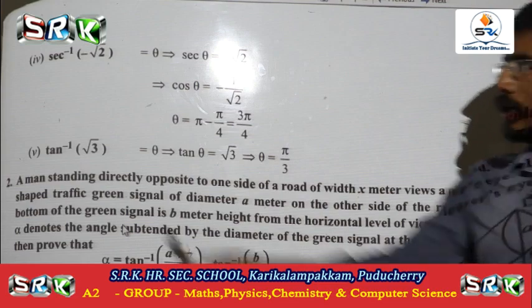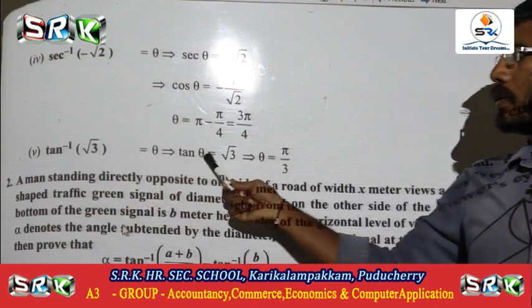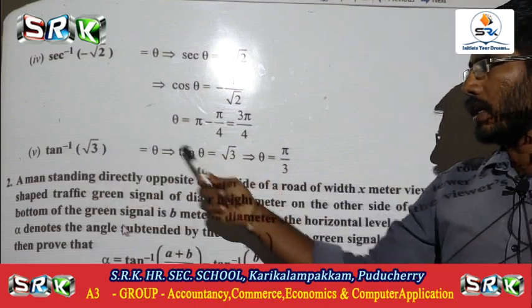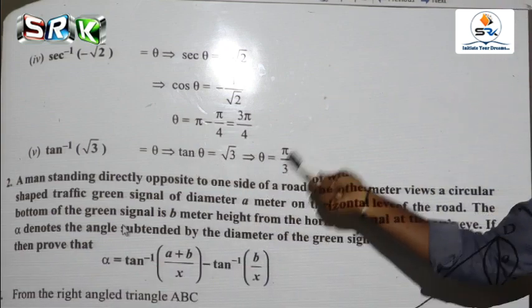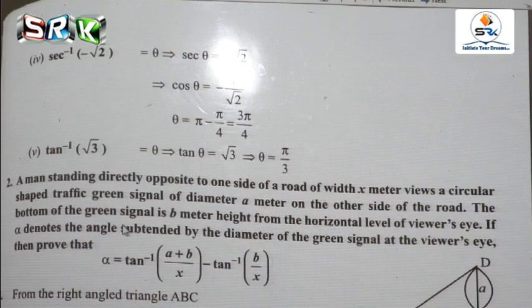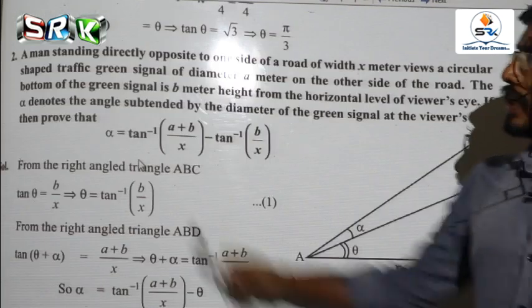Last one: tan⁻¹(√3). Let tan θ = √3, so θ = π/3. That is the solution for the principal value of the given sum.